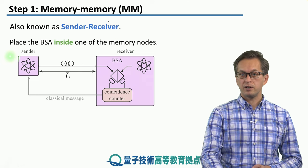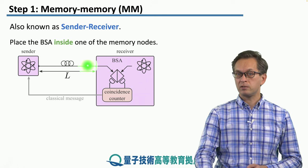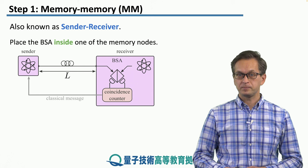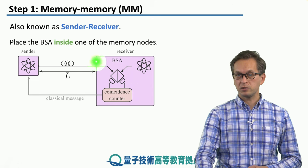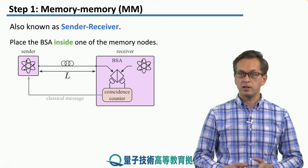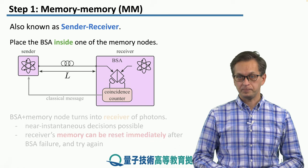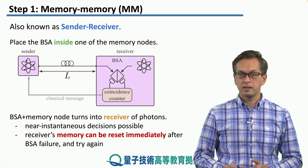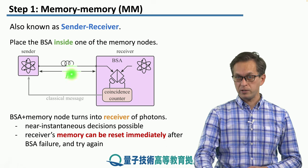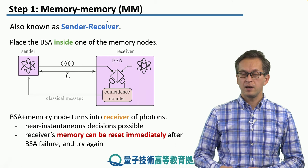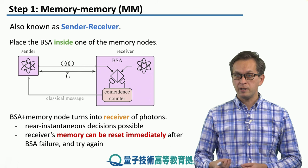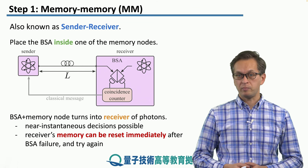The difference here is that now the photons have to travel length L, the full distance between the two repeaters. But still, we have the usual coincidence counter at the BSA, and the classical message then has to travel all the way back to the sender memory. This allows near-instantaneous decision-making for the receiver memories. And also, if our attempt at a Bell-state measurement is unsuccessful, one of the memories can immediately reset and attempt again.